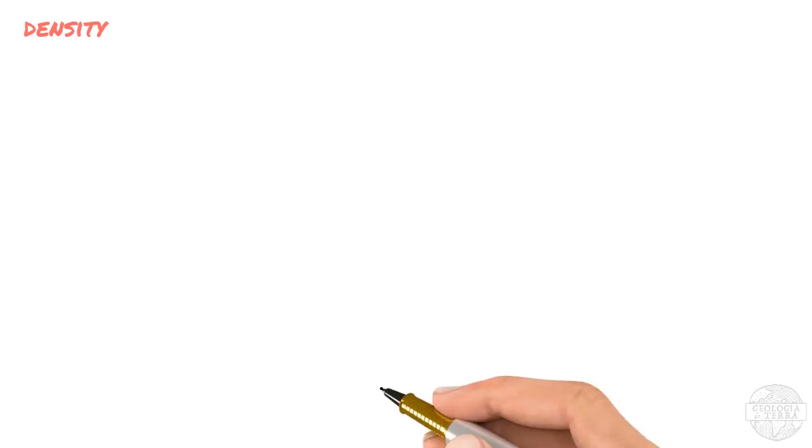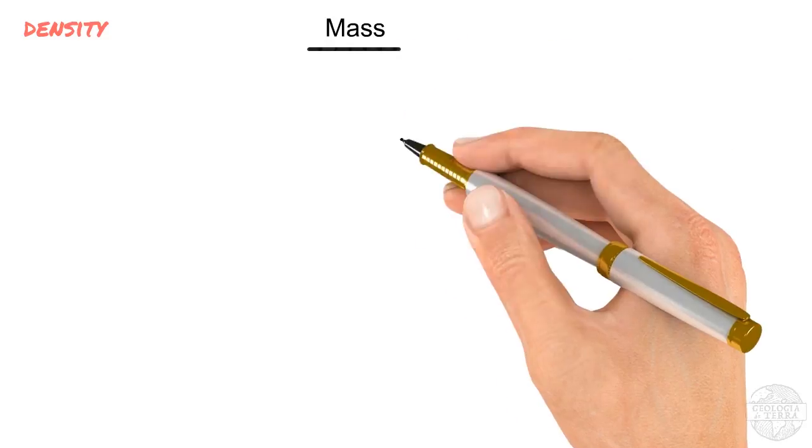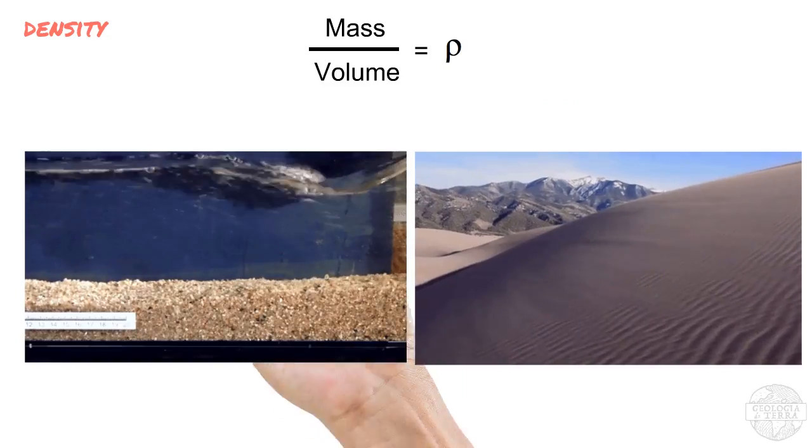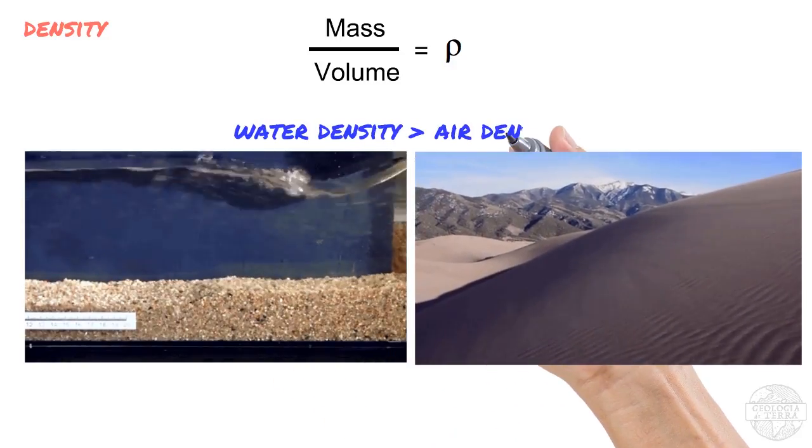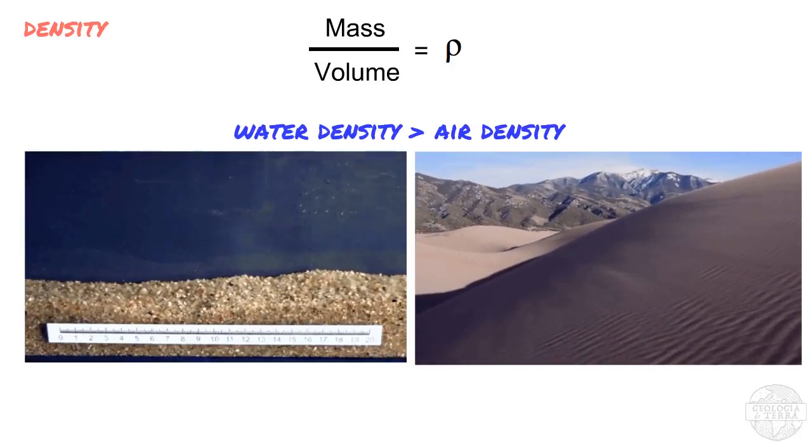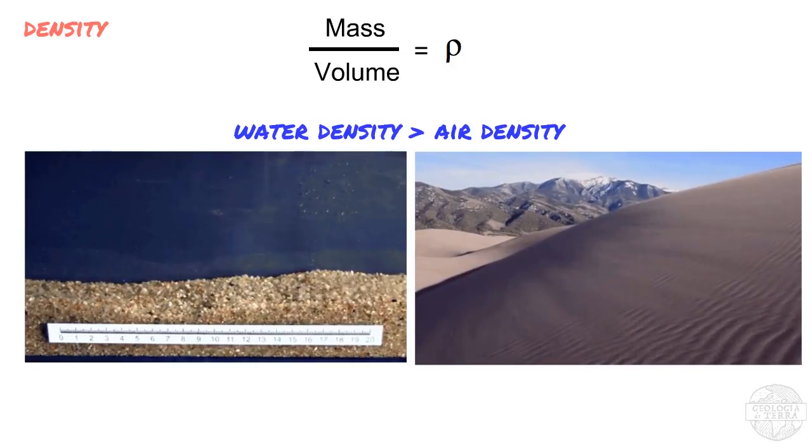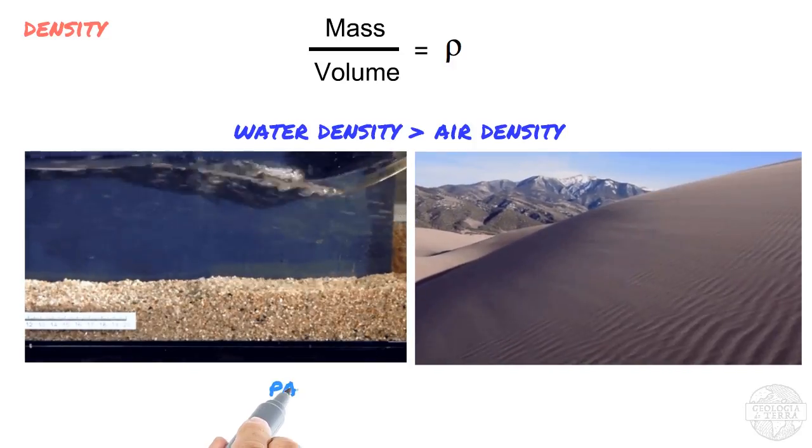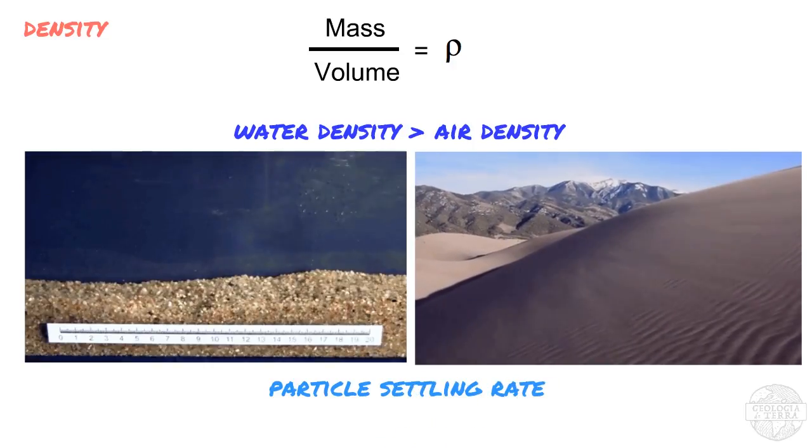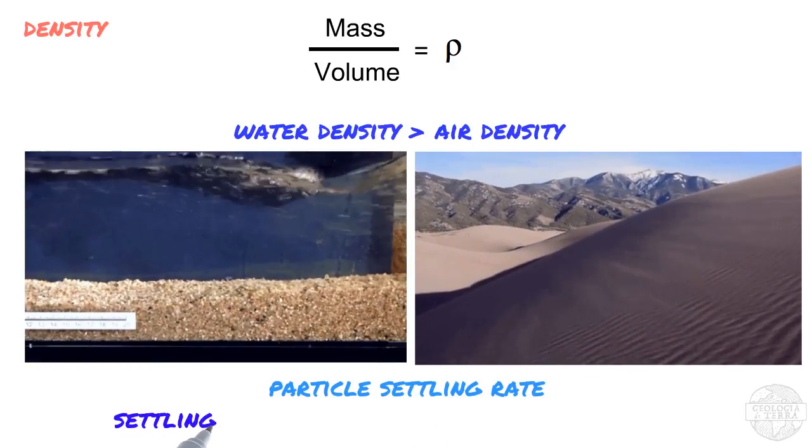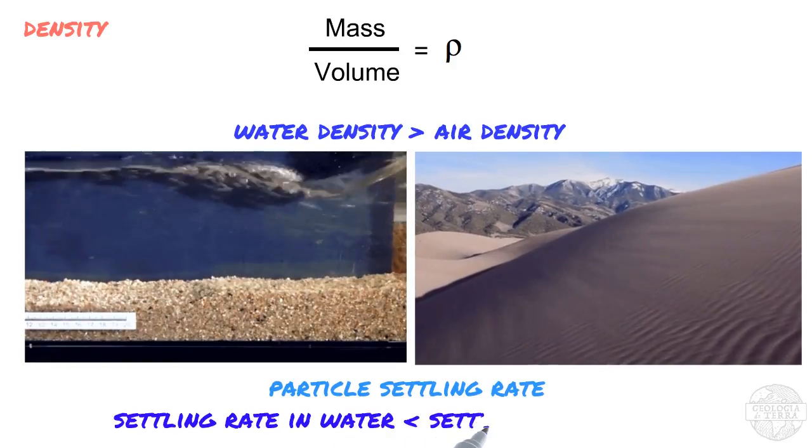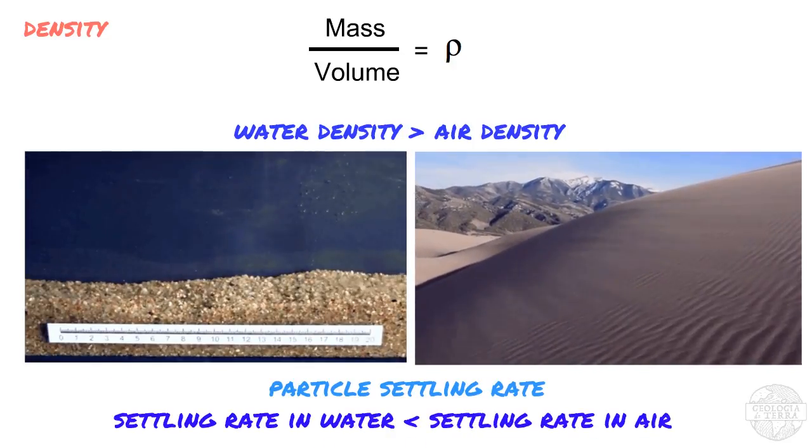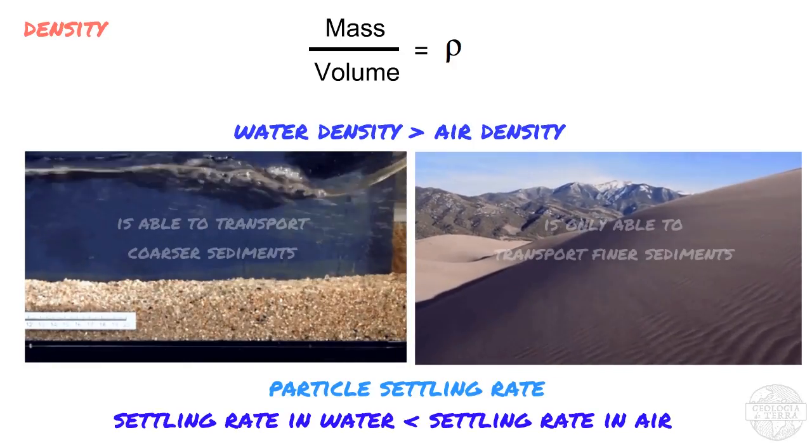The density of the fluid is defined as mass per unit volume of the fluid, referred to as ρ. Density affects the magnitude of the forces acting on a fluid and on the surface where the flow occurs. Density also affects the rate at which particles fall or settle through a fluid, where particles within denser fluids will have lower settling rates. For instance, because water is denser than air, water will be able to transport coarser sediments than air will.